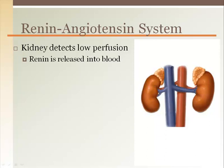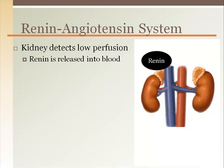Therefore, the renin-angiotensin system is a very effective mechanism to increase blood pressure not only in the kidney but throughout the body as well. When the baroreceptors in the juxtaglomerular apparatus detect low pressure, renin is released into the blood.